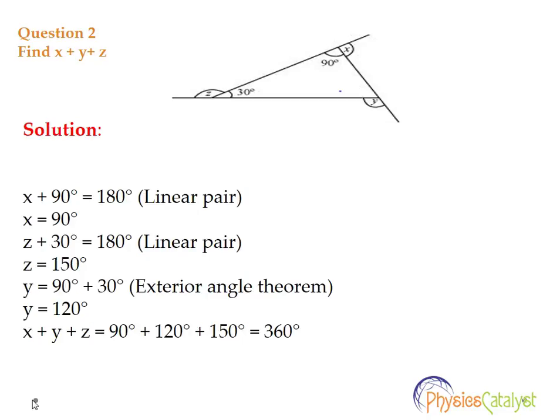Here, Z and 30 are linear pairs, so we know that Z plus 30 equals 180, that makes Z equals 150 degrees. Similarly, X plus 90 equals 180, so X equals 90 degrees.